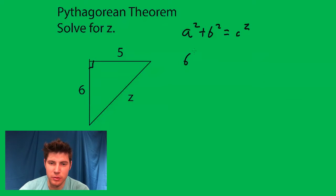So it's going to be 6 squared plus 5 squared equals z squared, because the hypotenuse is all we see on these.